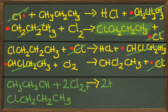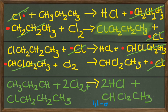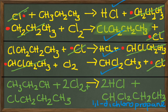Okay, so our overall reaction is going to be propane plus two molecules of chlorine to give us two molecules of HCl and 1,1-dichloropropane. So that's Cl2CH2CH3.